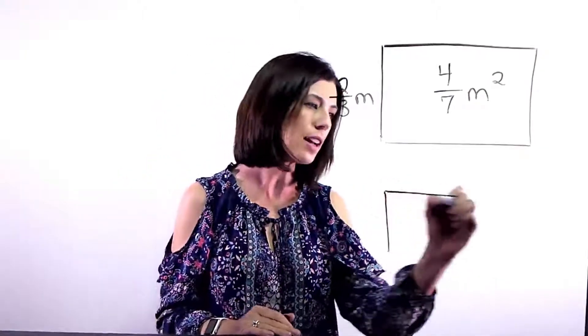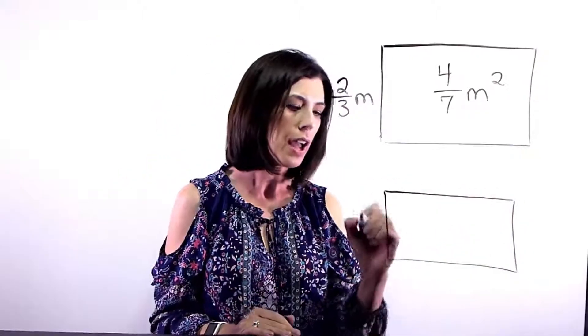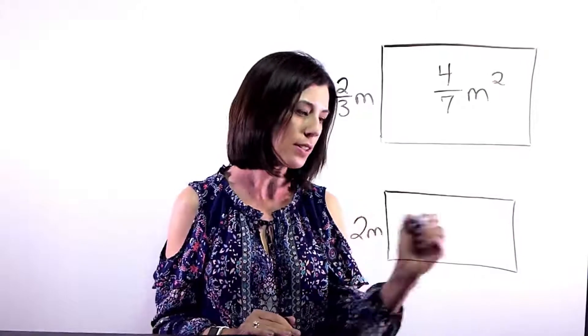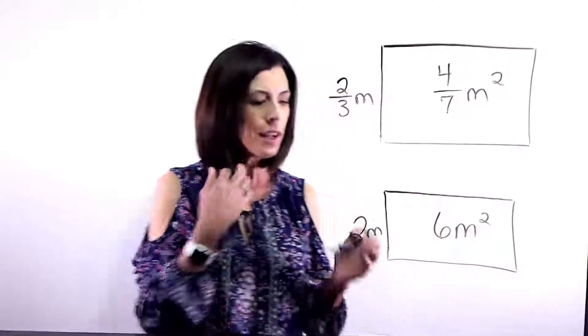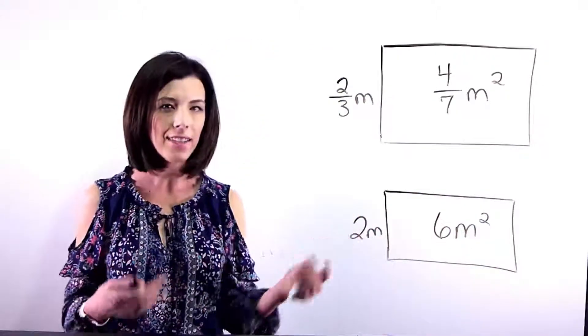So instead, let's think of a fish pond where I have a width of two meters and an area of, let's just say, six meters squared. So I need to think about how would I find the length.